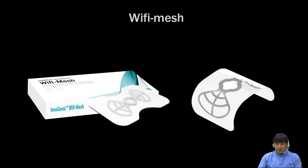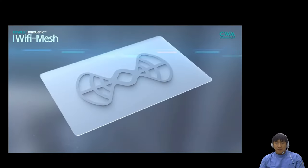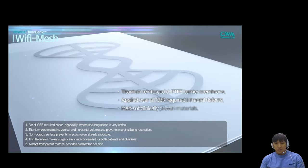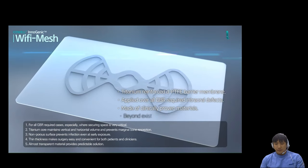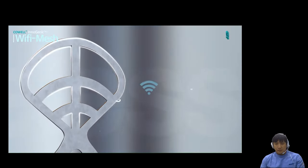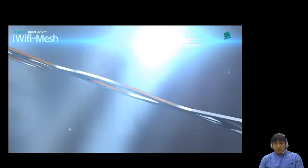Wi-Fi mesh contains a titanium frame, so it can be bent into various shapes and maintained well at the graft site. The DPTFE sheet of Wi-Fi mesh can reduce tissue damage and infection risk. Inogenic Wi-Fi mesh is a non-resorbable barrier membrane made of two DPTFE sheets with a Wi-Fi shaped titanium frame. Wi-Fi mesh consists of an inner titanium frame and two layers of DPTFE, fused between them to apply over intraoral defects. The shape of the titanium frame is similar to that of the wireless network icon, so this membrane was named Wi-Fi mesh.